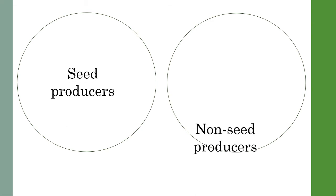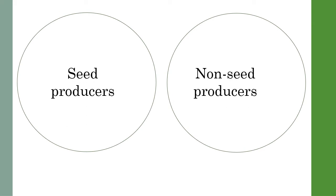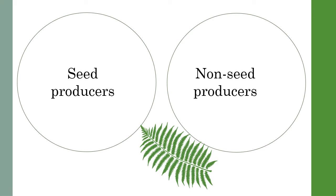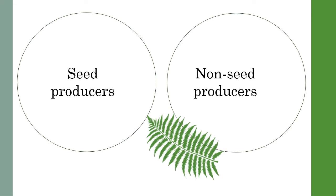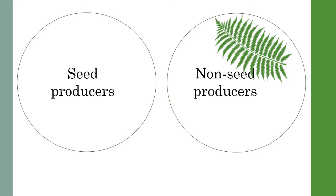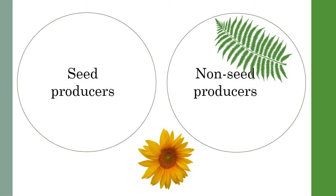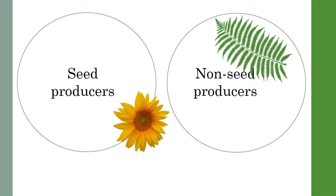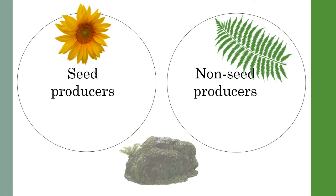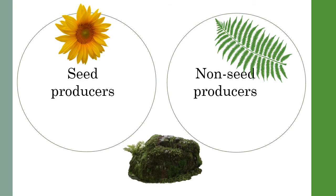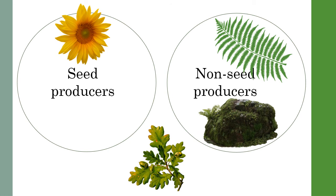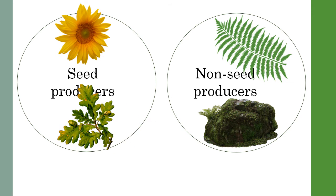Let's classify these plants into two groups — are they seed producers or non-seed producers? Firstly we have the fern. The fern is a plant which does not produce seeds. Next, a sunflower. A sunflower produces many seeds in the centre of its flower. Here we have moss. Moss is also a plant which does not produce seeds. And finally we have the oak tree, which does produce seeds in the form of acorns.